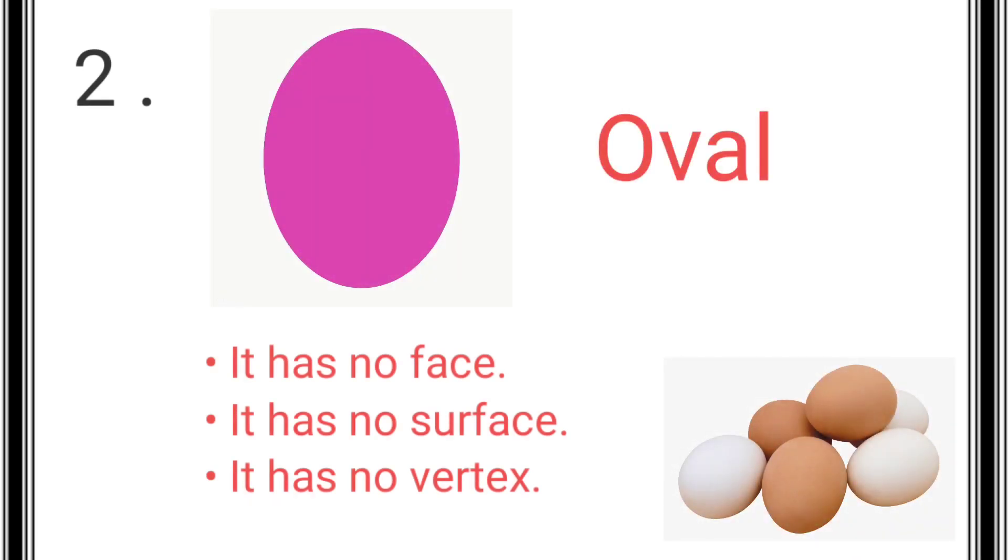The next shape is oval. An oval has no face, no surface, and no vertex. Example: egg.